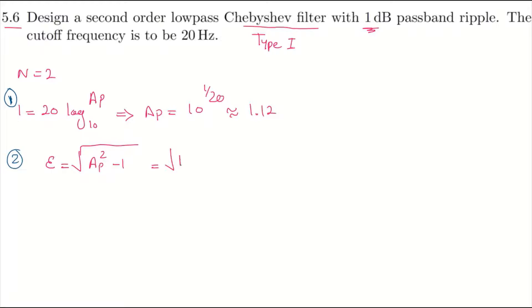This equals the square root of 1.12 squared minus 1, and this almost equals 0.504. Right, so this is the second, the third step is the transfer function.